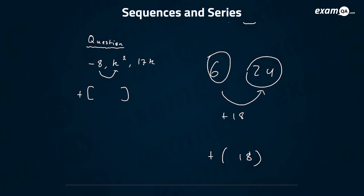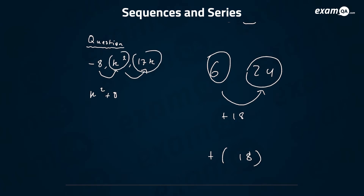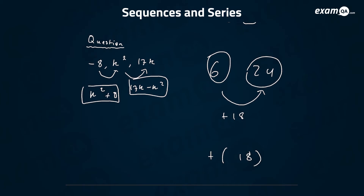So just like that, what would this difference be? We're doing the second term take away the first: k squared take away minus eight, which is just k squared plus eight. And what's happening on the other side? We're doing k squared plus eight each time. But they wrote something else there — 17k minus k squared. If this is an arithmetic sequence, these two differences should be the same thing, so we can make an equation from that.